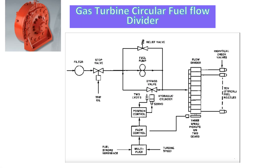Flow divider is an equipment shown here in this simplified sketch. Liquid fuel comes to the turbine and passes through a filter. Then there is a liquid fuel stop valve — when a turbine trip signal is received, this is the first valve which stops and cuts off the fuel supply. Then it goes to a fuel pump and there is a relief valve and bypass valve. And then it comes to the flow divider.